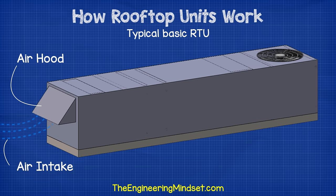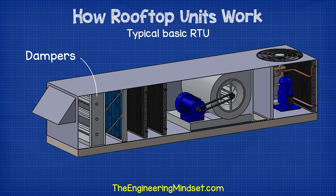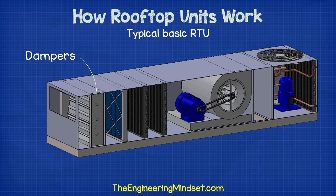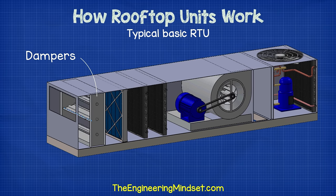The next thing we might find are some dampers. Not every unit has these, but newer models typically do. These are basically sheets of metal which rotate together. They open fully to allow air to enter the unit, or close to seal the unit and prevent air from entering or leaving. Some dampers can vary their open position between fully open and fully closed, especially if recirculation is used.